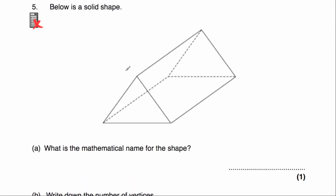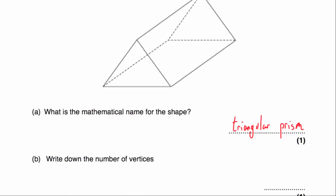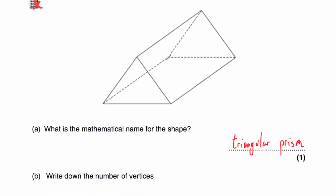Question number 5: below is a solid shape. What is the mathematical name for this shape? Whenever I look at it I'm thinking of a tent or a Toblerone bar — it's a triangular prism. It's a prism because it's got that constant cross-section, a triangle that carries on the whole way through, so it's a triangular prism. Part B: write down the number of vertices. Counting the corners: 1, 2, 3, 4, 5, 6 — it's got 6 vertices.